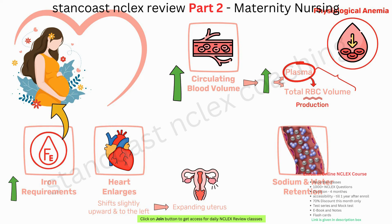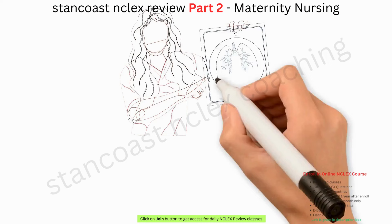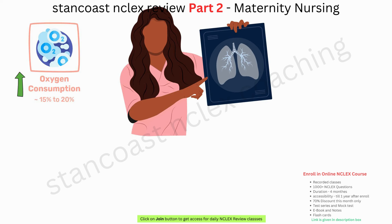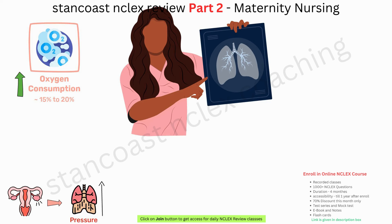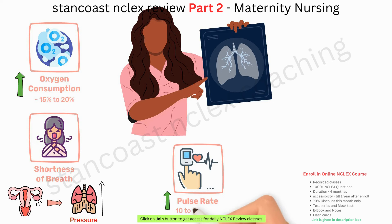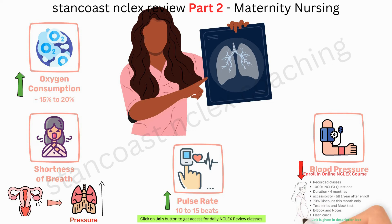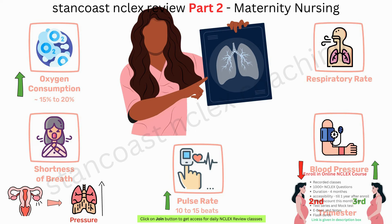Turning to the respiratory system, oxygen consumption rises by approximately 15–20%. The enlarging uterus exerts pressure on the diaphragm, pushing it upward, potentially causing shortness of breath. Pulse rate may increase by 10–15 beats per minute, while blood pressure undergoes a slight decrease in the second trimester before rising in the third trimester. Respiratory rate mostly remains stable or slightly increases.